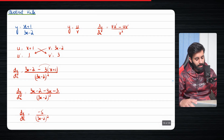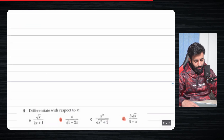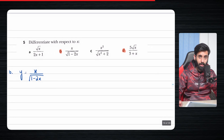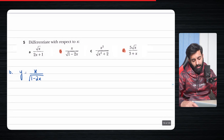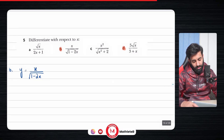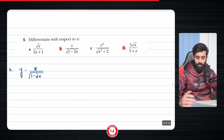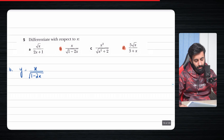Now we're going to do examples from the textbook — a few parts from question number 5. I'm going to do the ones that I've highlighted.